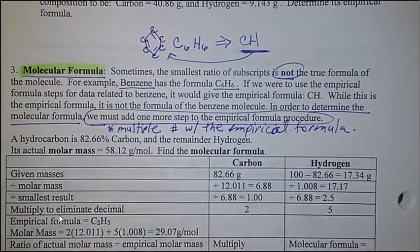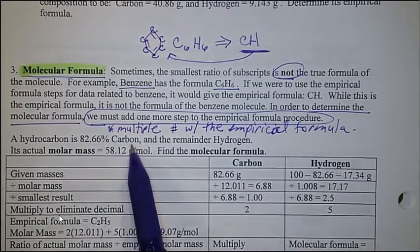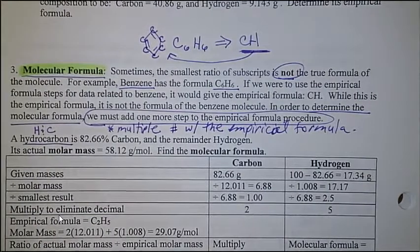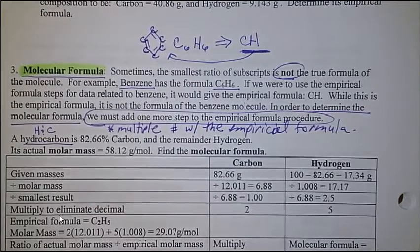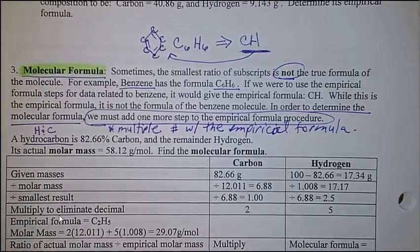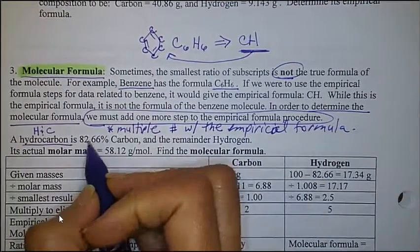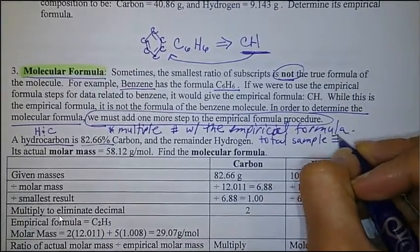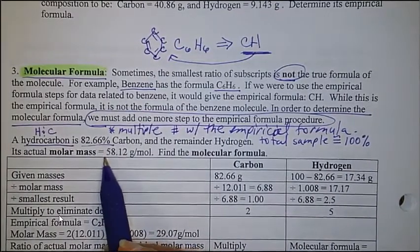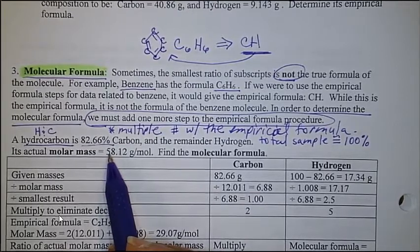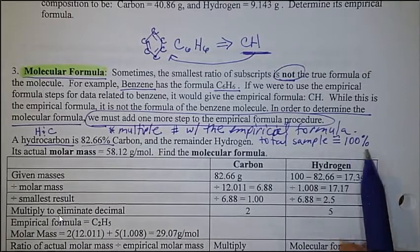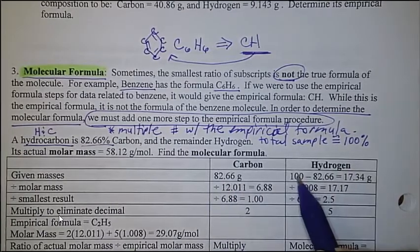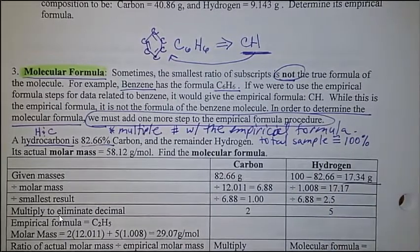So we've got a practice problem here — one that's already done. A hydrocarbon is 82.66% carbon and the remainder is hydrogen. Since it's a hydrocarbon, you know it contains hydrogen and carbon. Your total sample is 100%, so since we have 82.66 grams of carbon, 100 minus 82.66 gives you 17.34 grams of hydrogen.